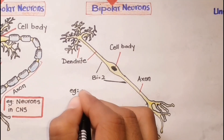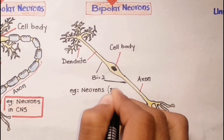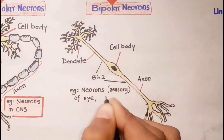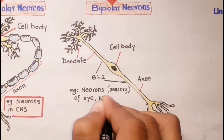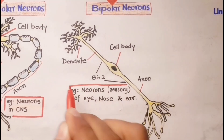Neurons in specialized parts of the eyes, nose, and ears are bipolar.